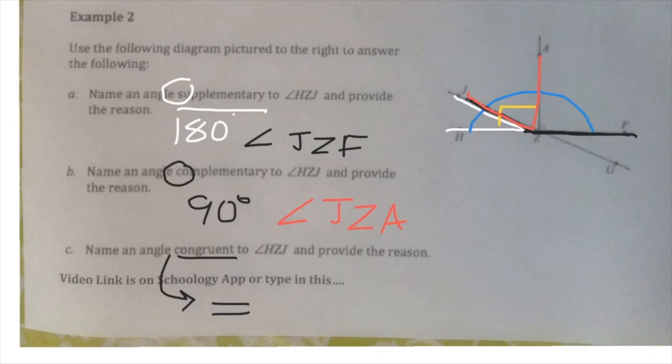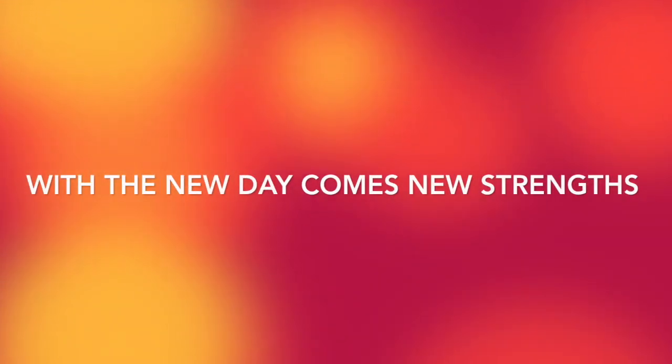To find an angle that's congruent to the white angle, well remember our vocabulary from just above. We're looking for the angle that would have the same measurement, and that would be the vertical angle. So angle FZG would be correct, or if you wanted to say it in reverse, GZF would also be correct. And we are done. Have a great day.